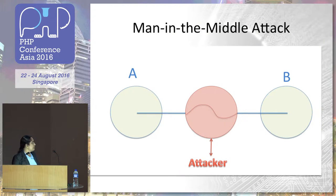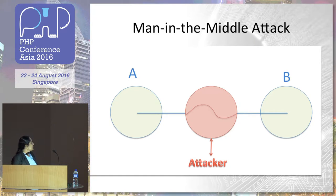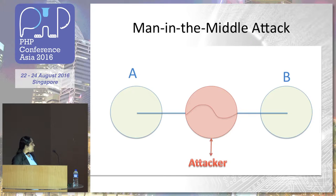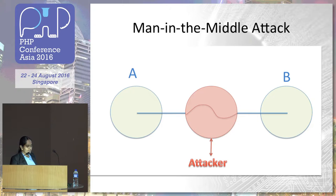The next attack is the man-in-the-middle attack. For example, there are two systems A and B. They think they are communicating with each other directly, but an attacker secretly relays and can intercept the data. For example, they can steal passwords or cookies. So what is the solution? Always use SSL.